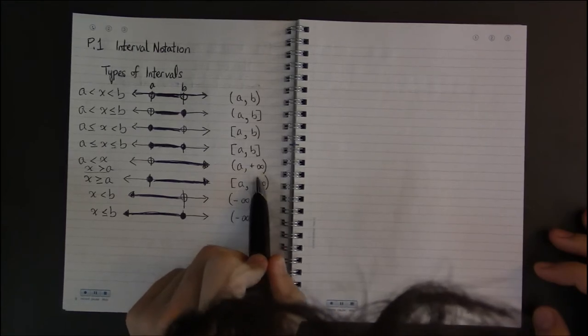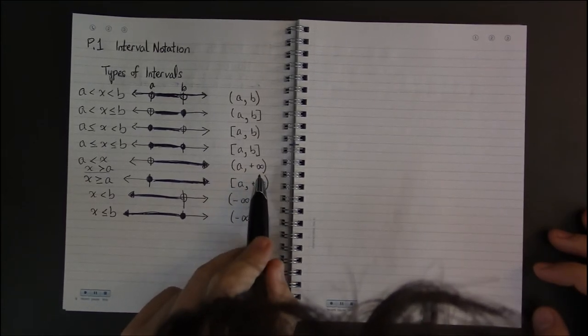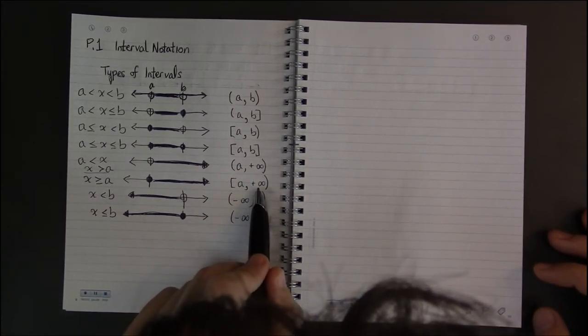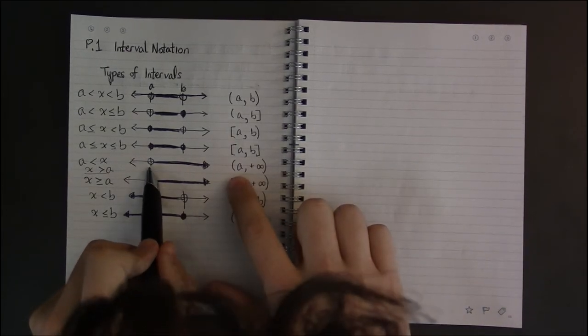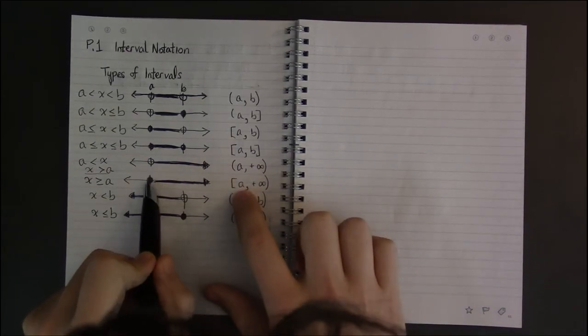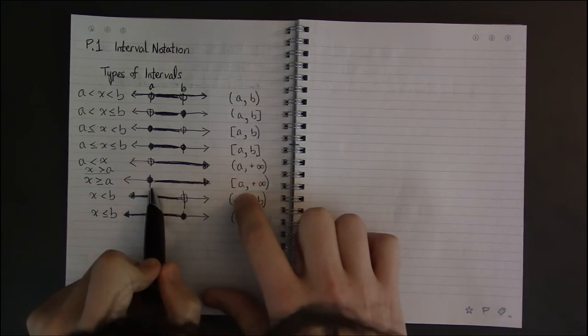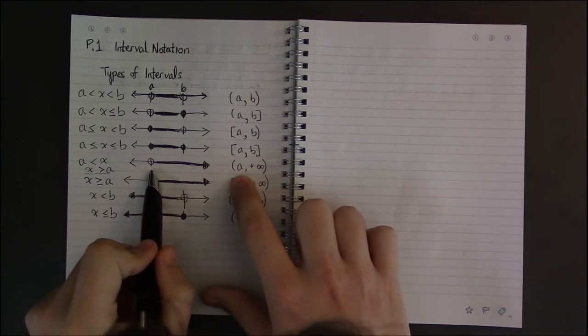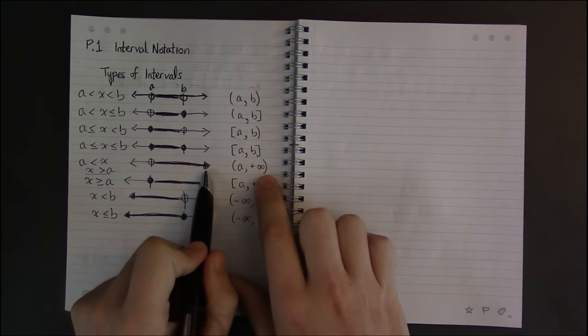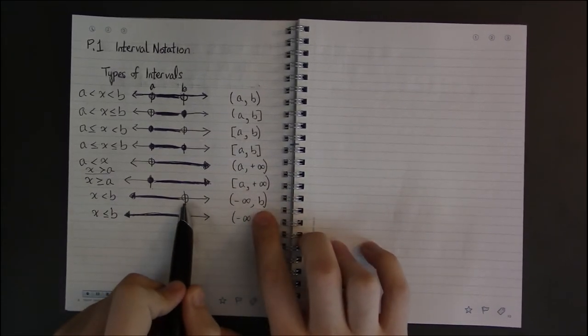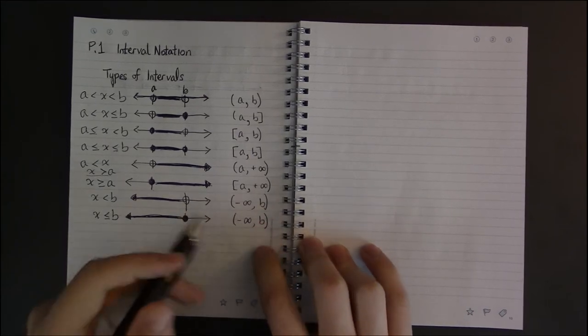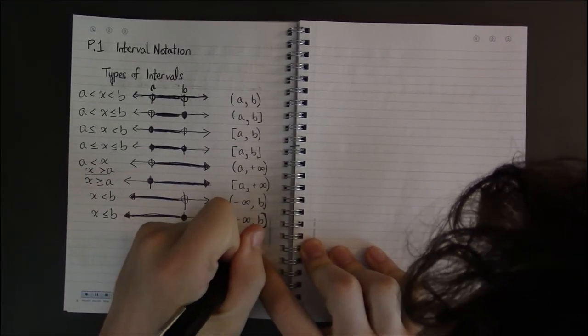In interval notation, we write this as plus infinity. So we're taking all values starting from a, maybe including or in this case excluding a, and everything above. Whereas here, we're taking b—this should be a closed bracket—as our upper bound.